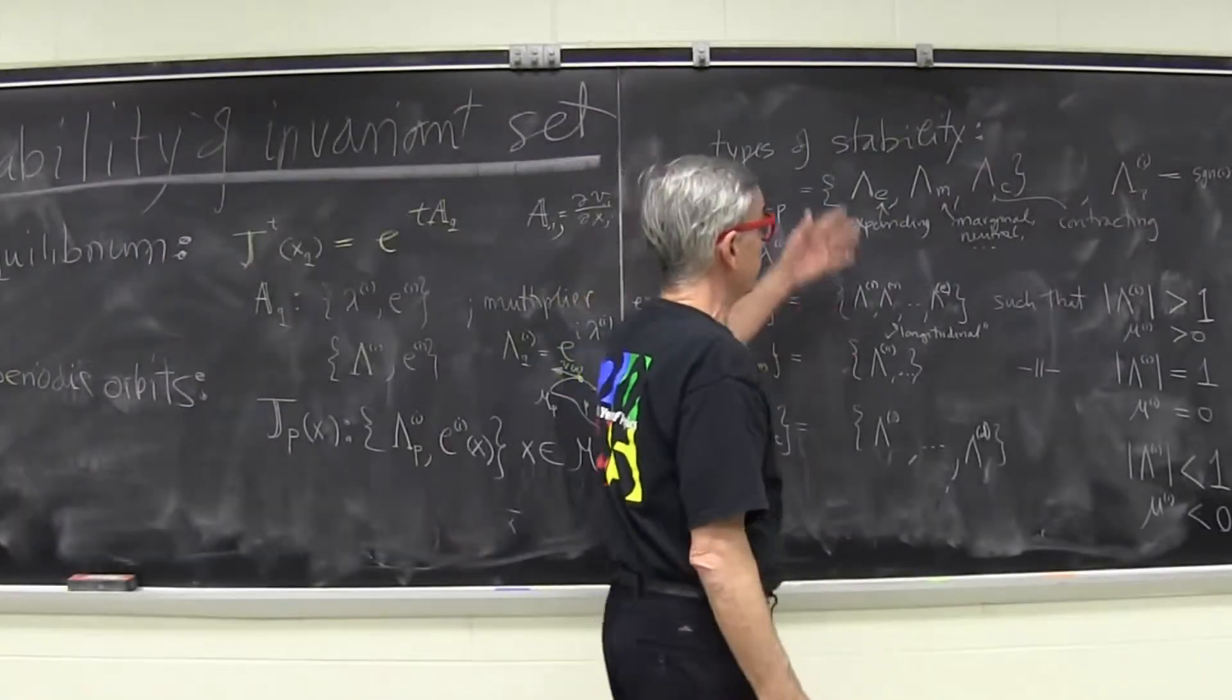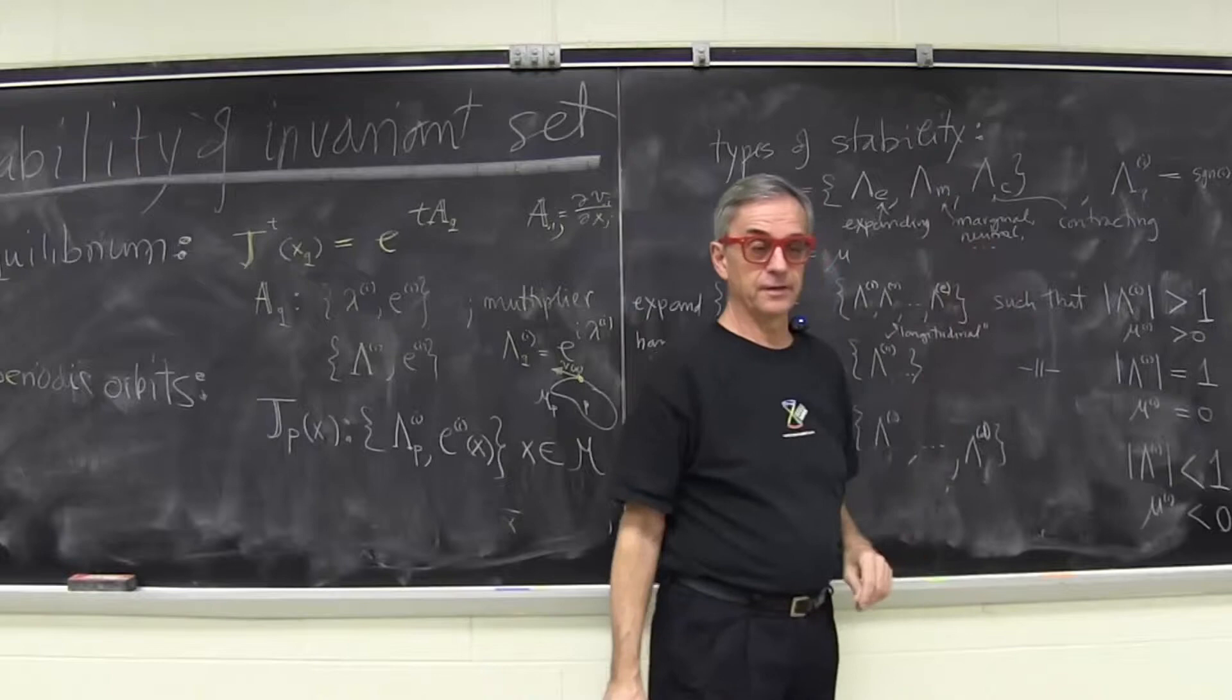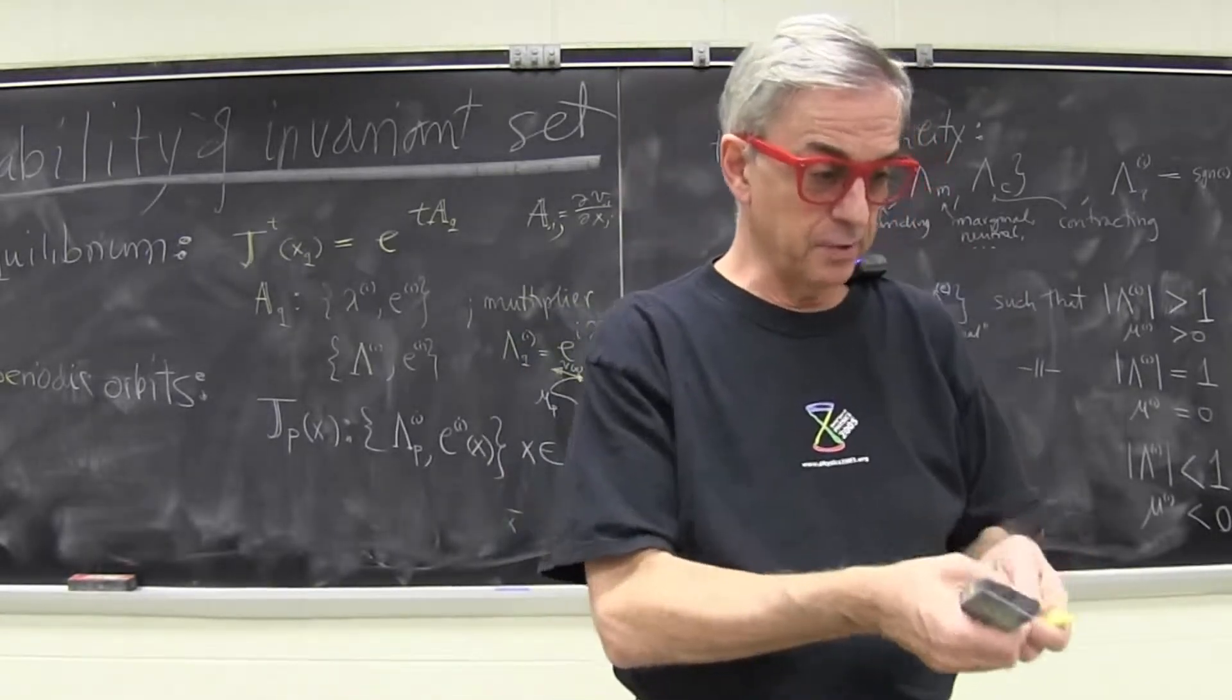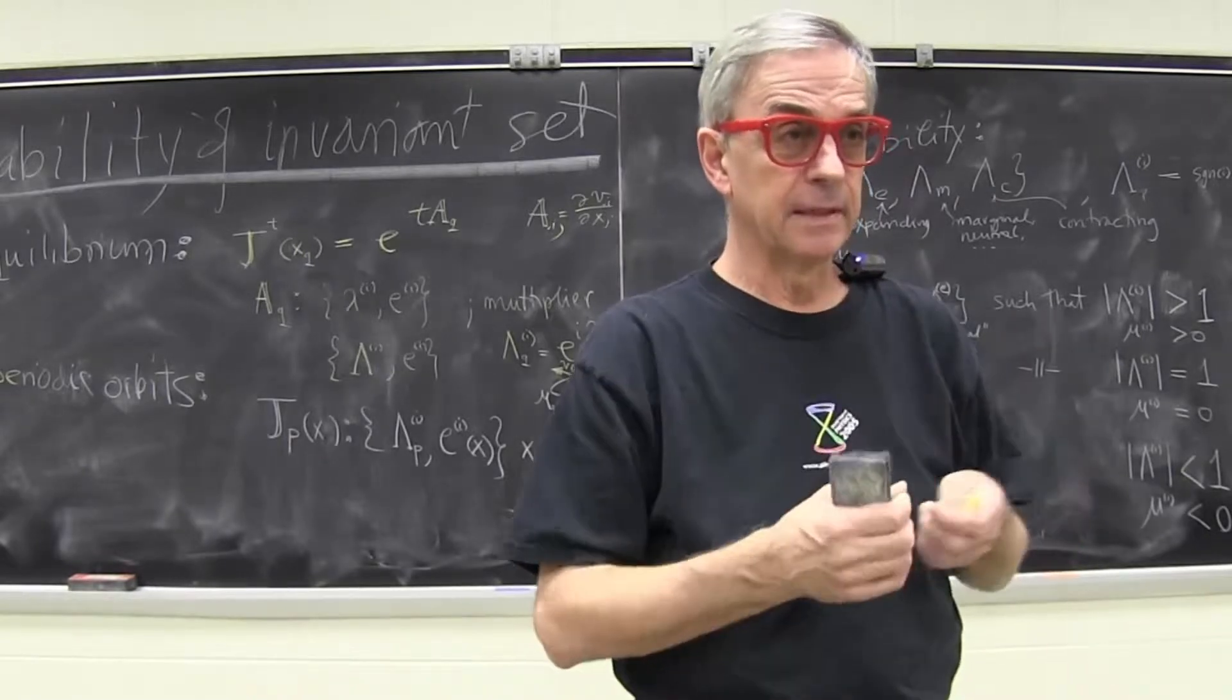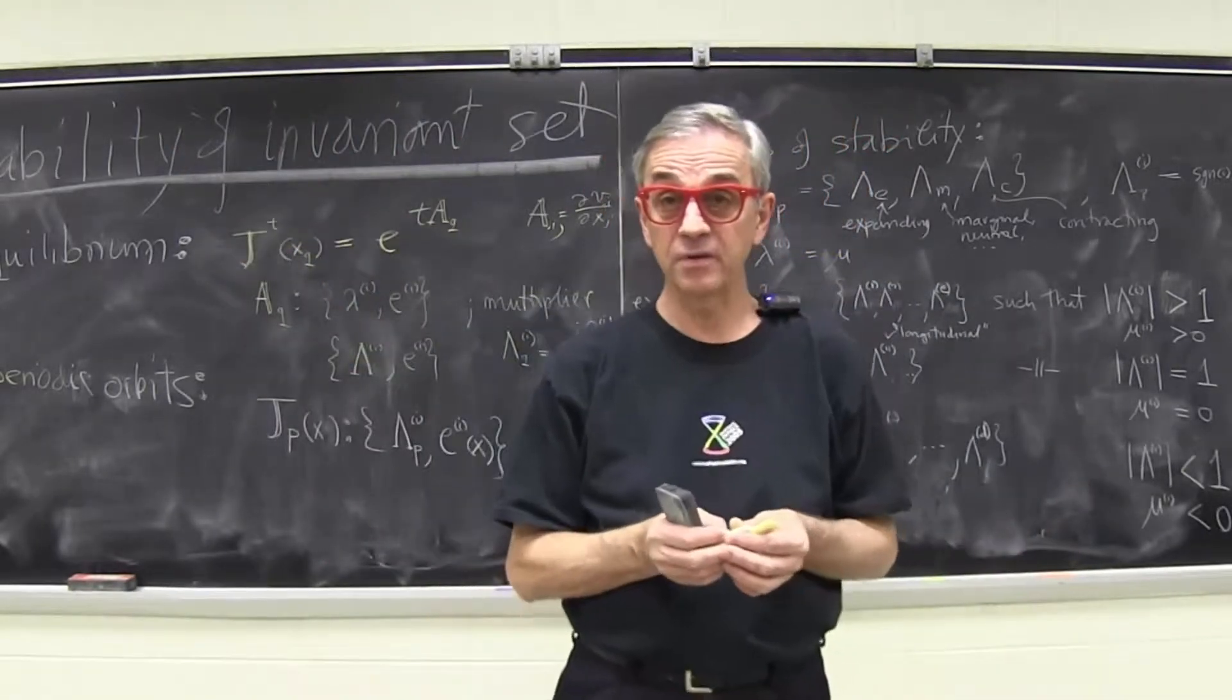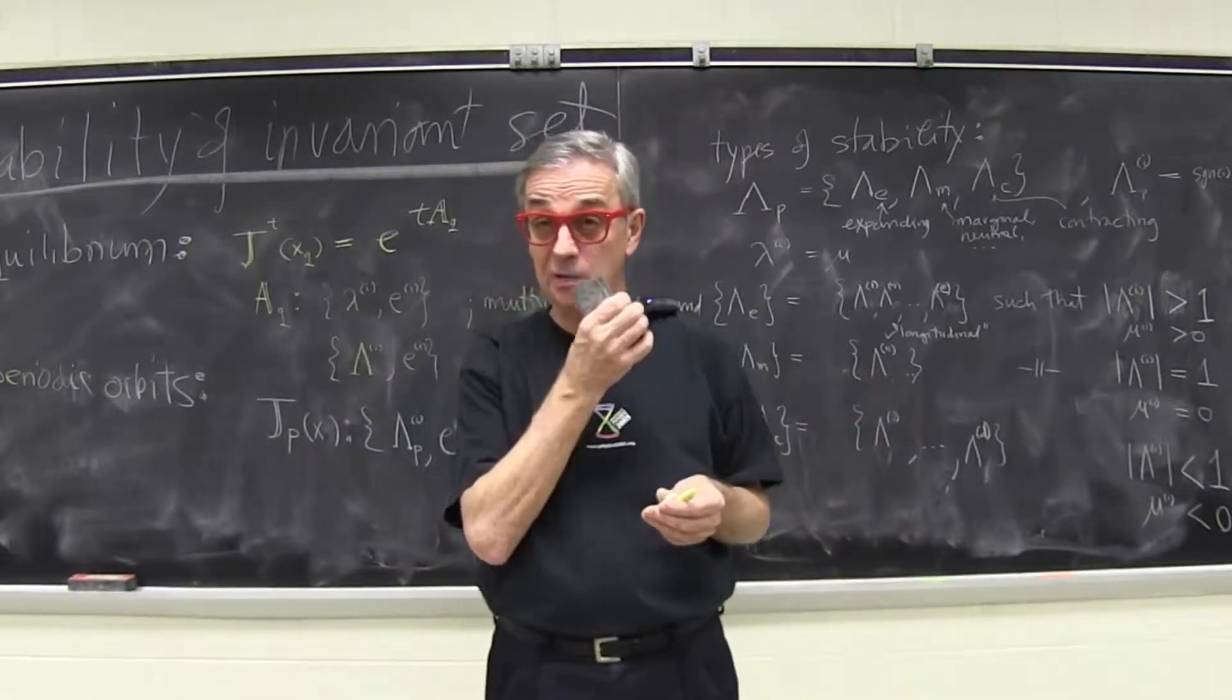Is this invariant classification? So when you tell me that this orbit looks unstable in laboratory frame, if I go to some other frame, is it still going to be unstable? Can I stabilize it just by changing coordinates?